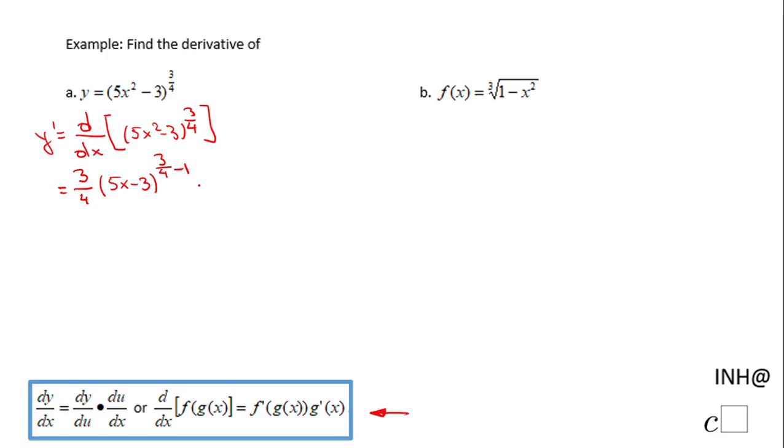So I use the power rule as I said, times the derivative with respect to x of 5x² - 3. So this is the chain rule that you see here on this second row.